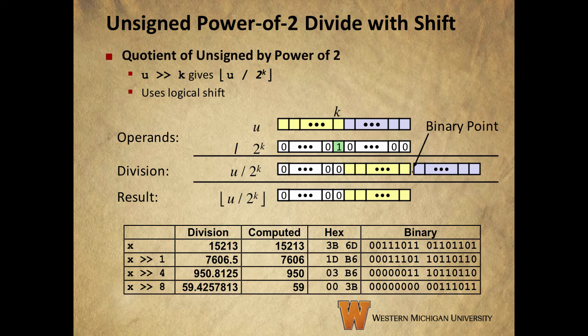Now, a right shift gives us division by a power of 2. So, shifting left gives us multiplication, shifting right gives us division. Shifting integer u by k bits to the right gives us u divided by 2 to the power of k.